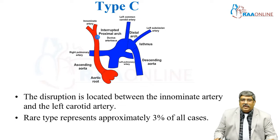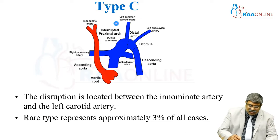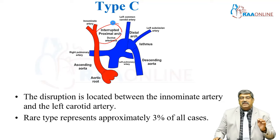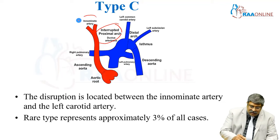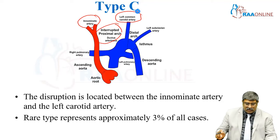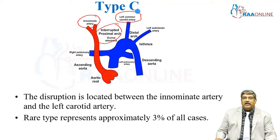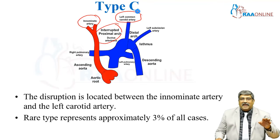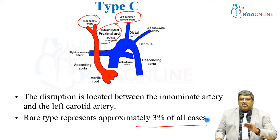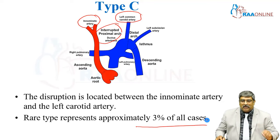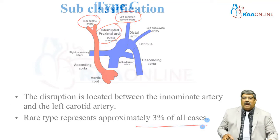Coming to type C, which is located in the proximal arch, the interruption is between the innominate artery and the left common carotid artery. It is a rare type, accounting for only 3% of all cases.